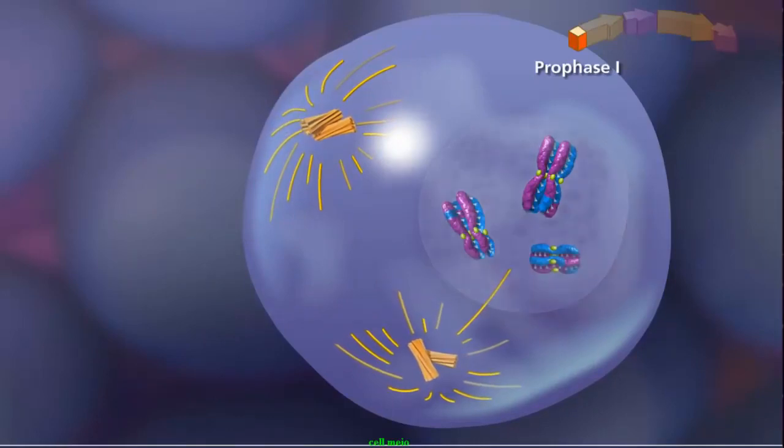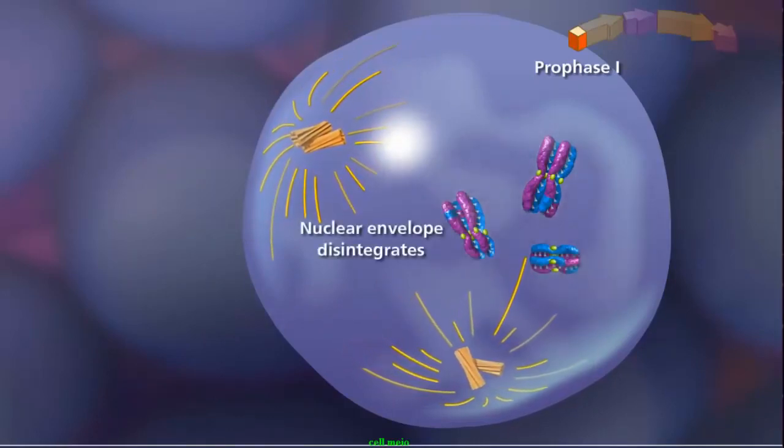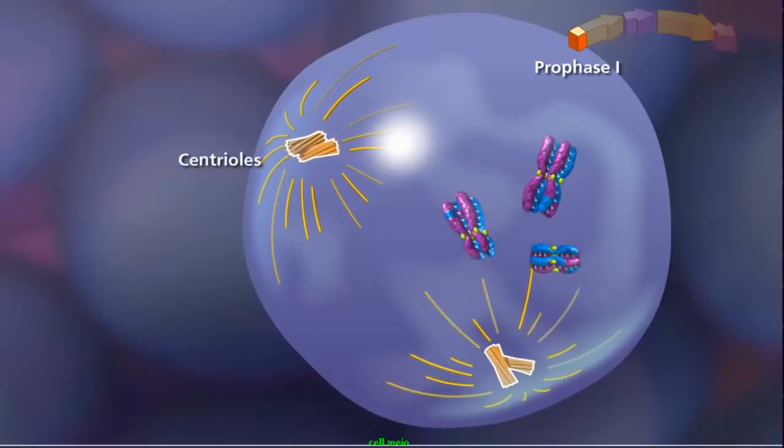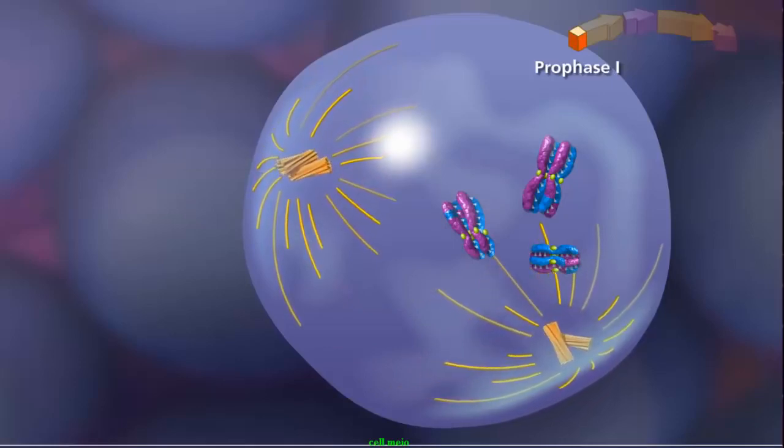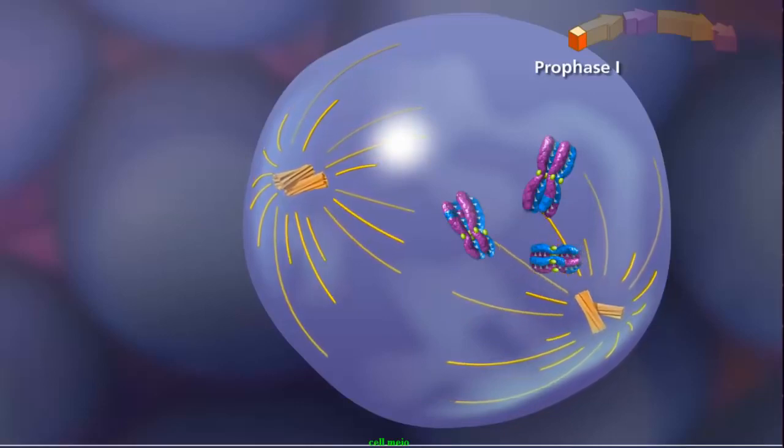Prophase I concludes with the fragmentation of the nuclear envelope as the duplicated centriole pairs move to opposite poles of the cell. As they move, the centrioles extend spindle fibers, forming the meiotic spindle.